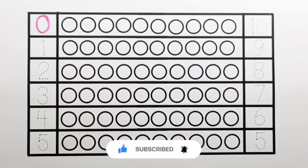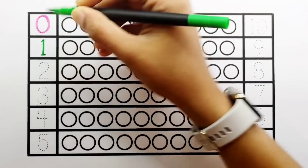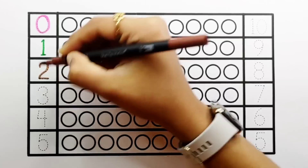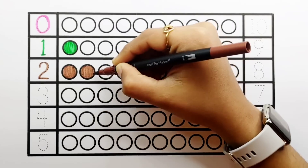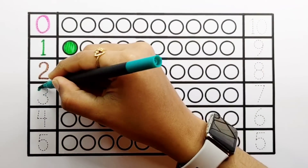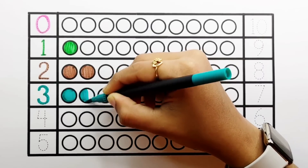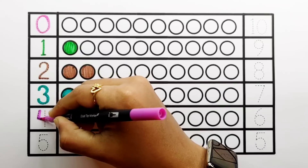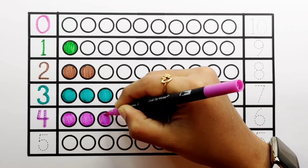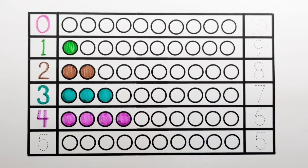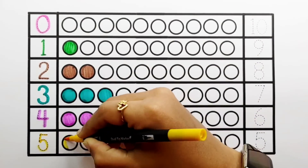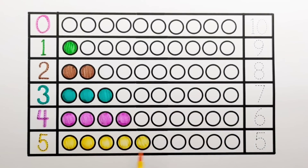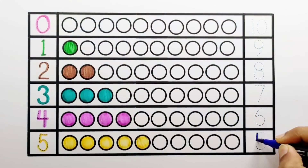0 balls. 1 — 1 ball. 2 — 1, 2 — 2 balls. 3 — 1, 2, 3 — 3 balls. 4 — 1, 2, 3, 4 — 4 balls. 5 — 1, 2, 3, 4, 5 — 5 balls.